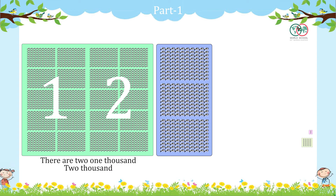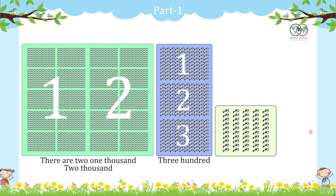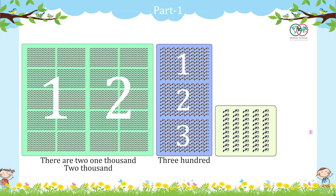How many groups are in each group? 1, 2, 3. How many groups are in each group? 1, 2, 3, 4, 5.